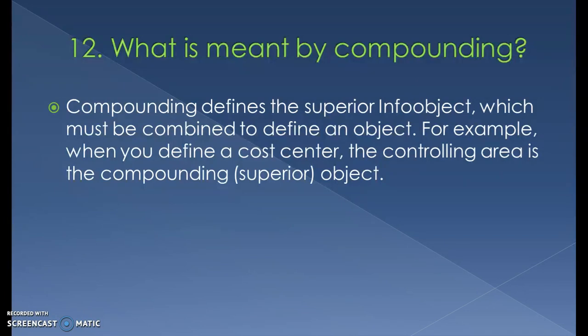What is a compound component? A compound component defines a superior InfoObject that must be combined to define another object. For example, when you define a Cost Center, the Controlling Area is the compound or superior object. It is like having a classification hierarchy where one object sits under another.